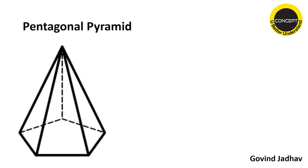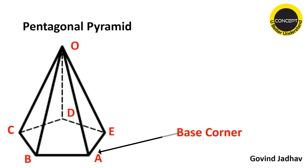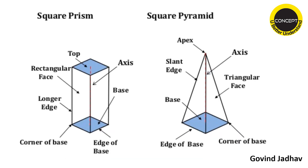Now take the example of a pentagonal pyramid. The base corner, base side, and base are common parts between the prism and the pyramid. The important difference is that in a pyramid there is a slant edge, whereas in a prism there is a longer edge instead. This is the key differentiating point — longer edge belongs to a prism, slant edge belongs to a pyramid.